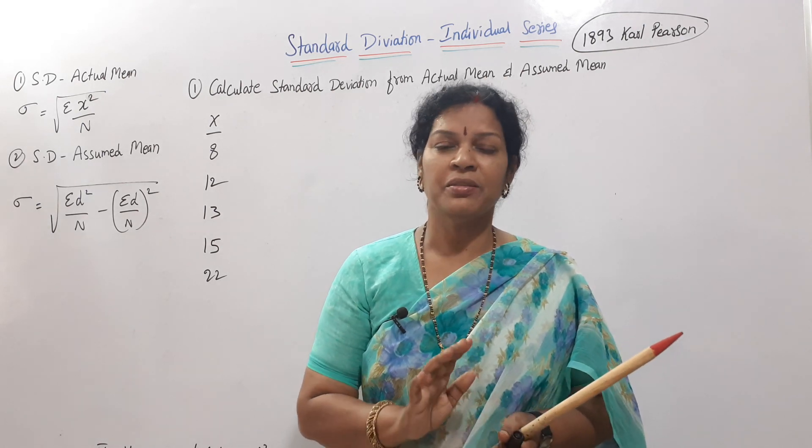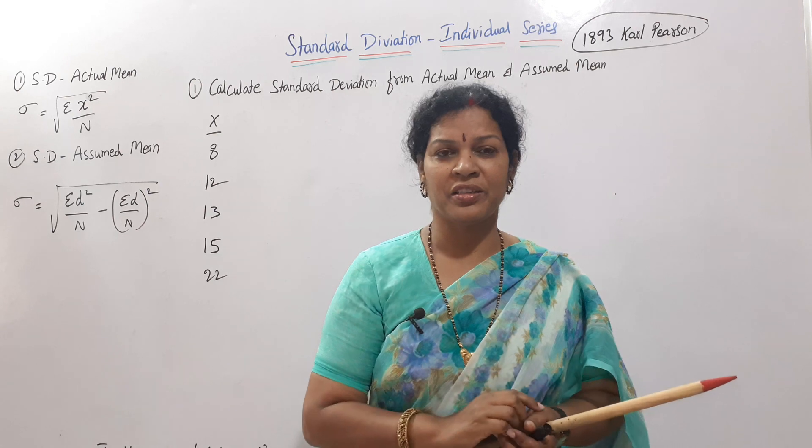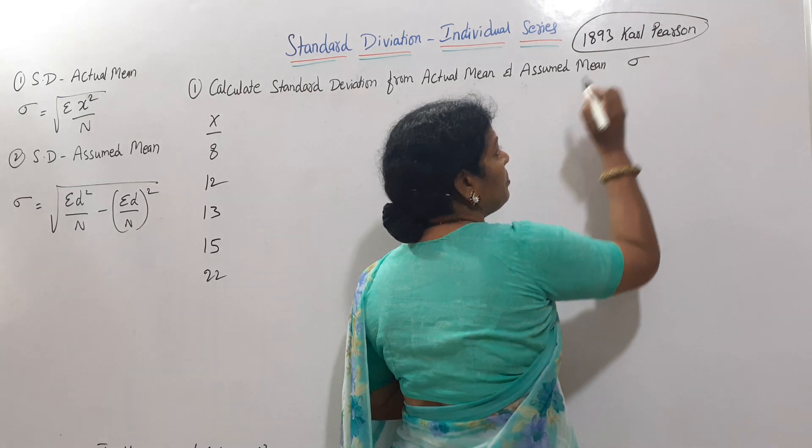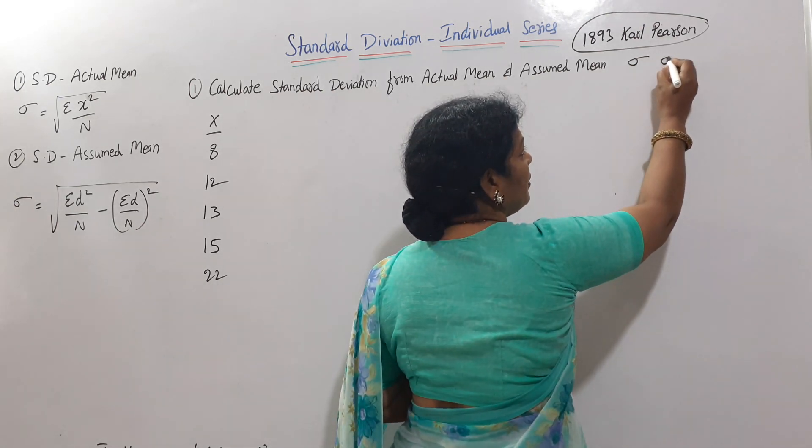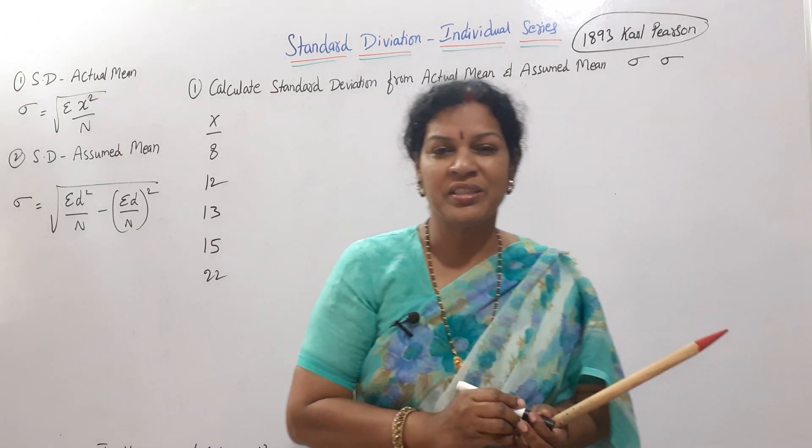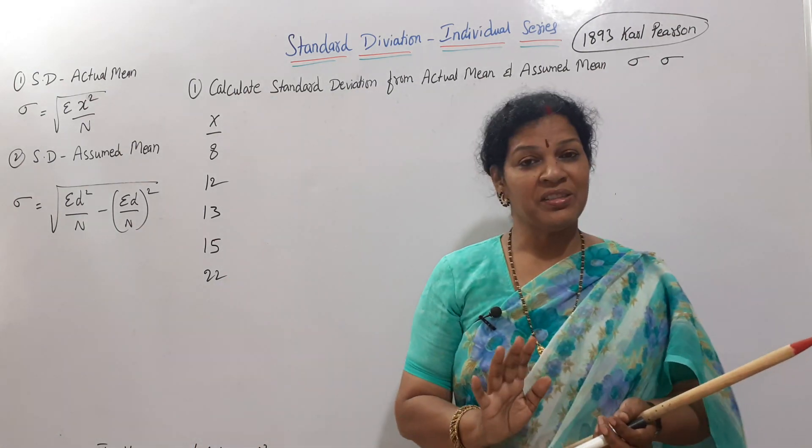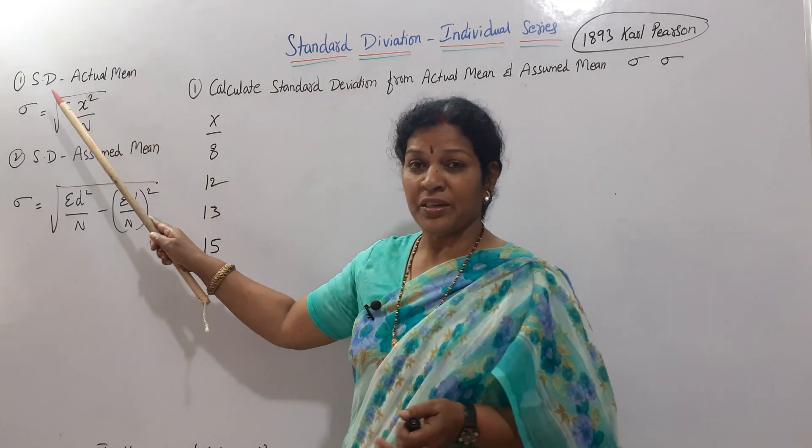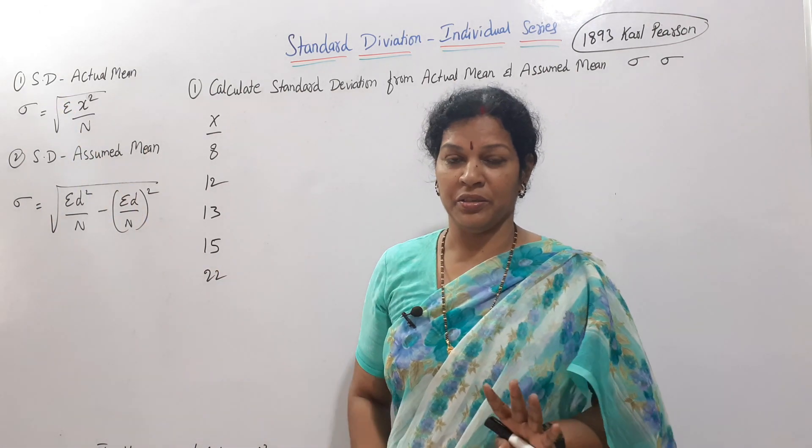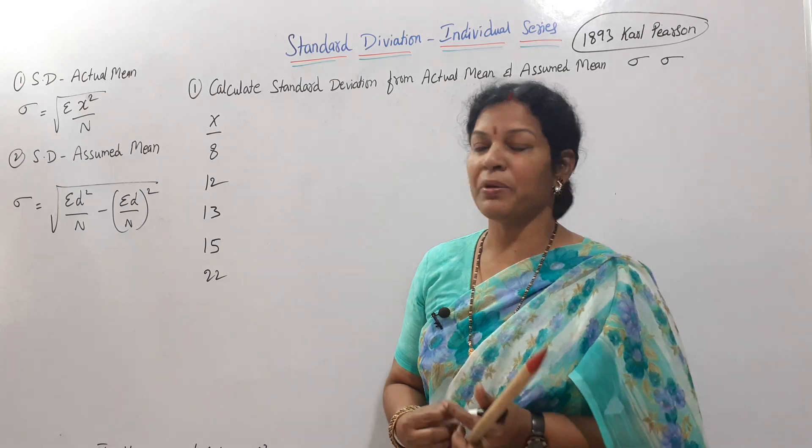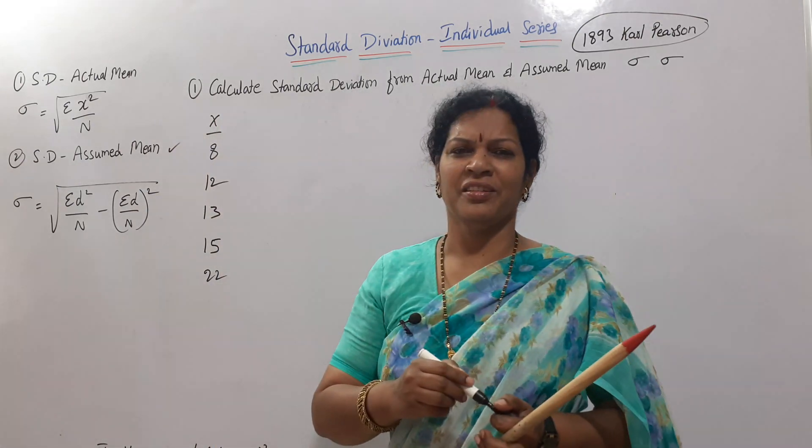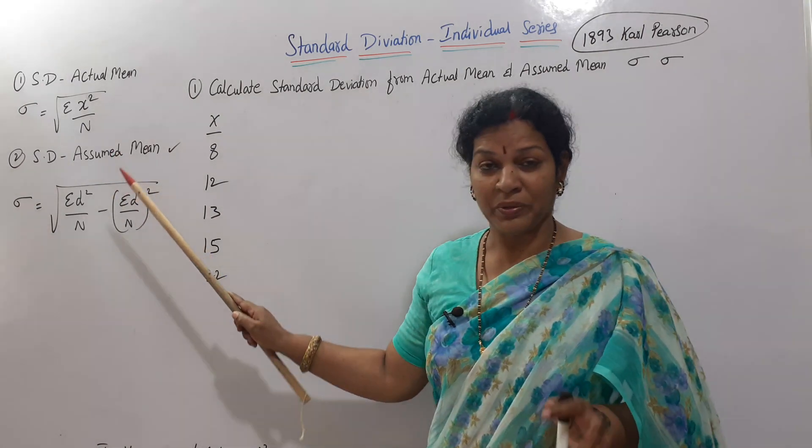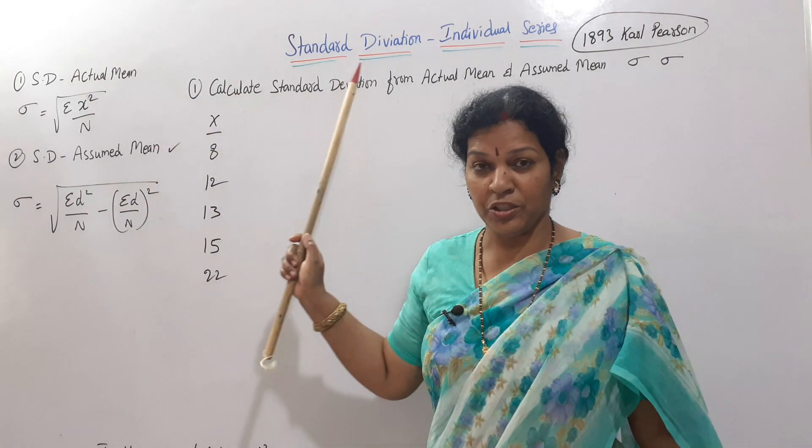We will discuss standard deviation - very simple, nothing to worry. How to calculate standard deviation? We show it with a symbol sigma, or you can say it as standard deviation. Today we will see only the individual series standard deviation formulas. There are two methods: actual mean or assumed mean. I'll show you both methods, but I prefer assumed mean. You need not calculate mean directly, you can assume any number and then calculate.